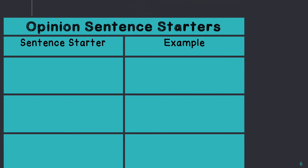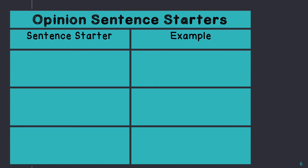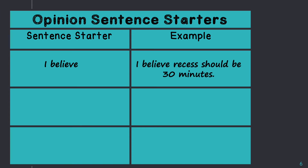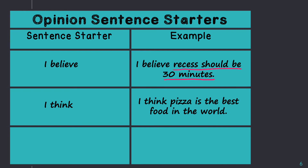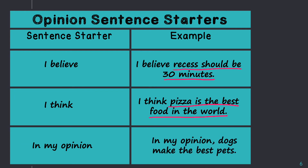Let's look at some ways you can begin a topic sentence for an opinion letter. The first sentence starter we could use is 'I believe.' For example: I believe recess should be 30 minutes — recess should be 30 minutes would be the topic. Another sentence starter is 'I think.' For example: I think pizza is the best food in the world. Another sentence starter is 'In my opinion.' For example: In my opinion, dogs make the best pets.